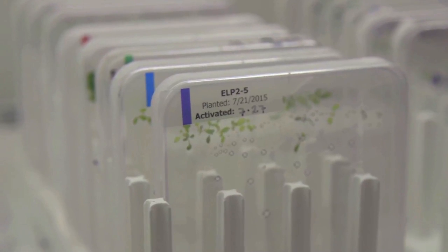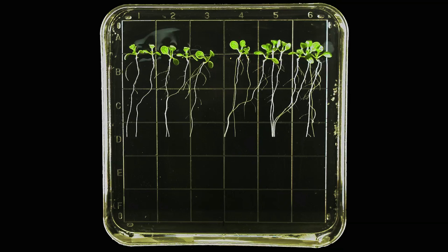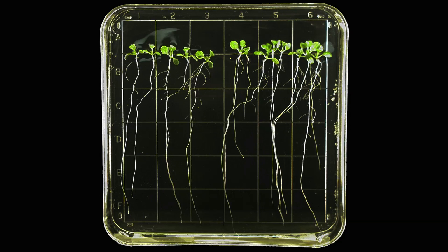You know, on Earth, we usually grow them vertically. We grow them on a vertical surface, and then the roots will grow pretty much straight down the surface of the plates. When you grow them in space, you think about it, there's no gravity to tell the roots which way to grow.